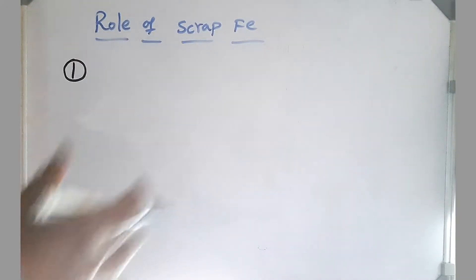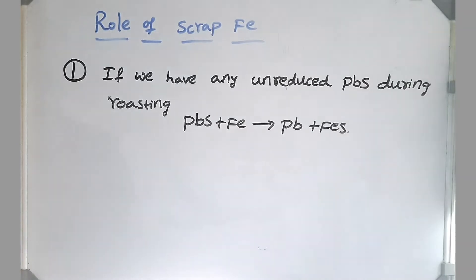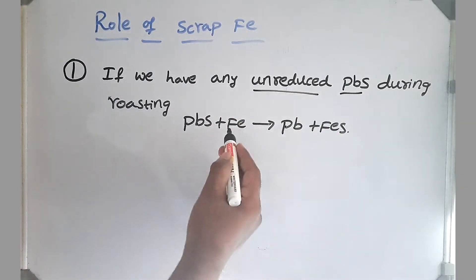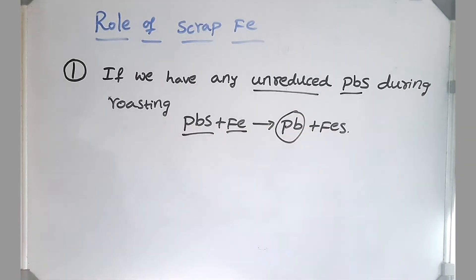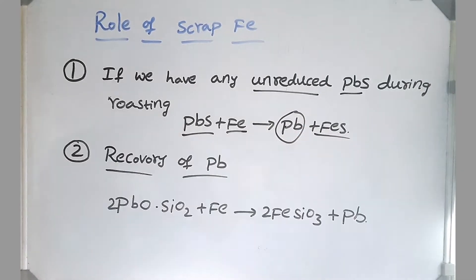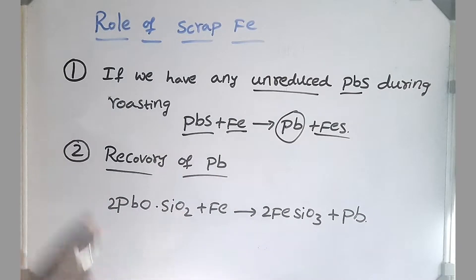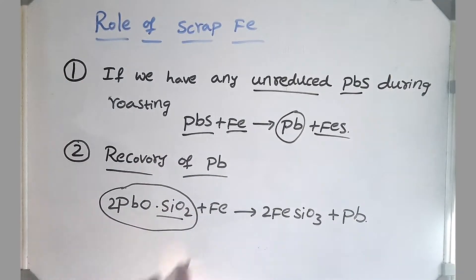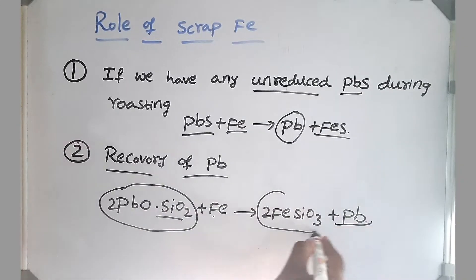Now let's discuss what is the point of adding scrap iron in lead blast furnace. First point is if we have any unreduced PbS during our roasting process, iron helps in reducing and to convert into lead and iron sulfide formation. It also helps in recovery of lead.